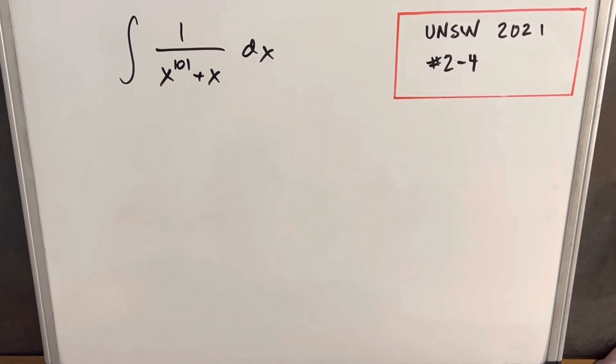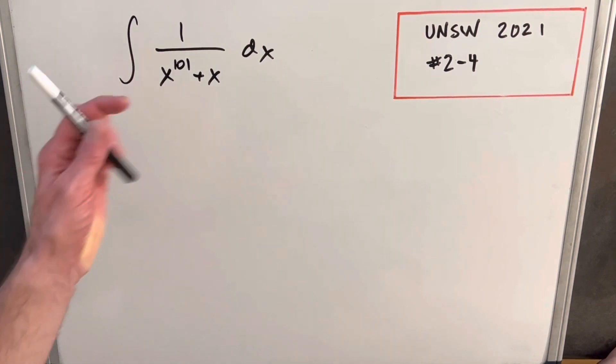We have the integral of one over x to the 101 plus x dx. Now, I did notice that we have kind of a large power here. 101 could be scary, but the thing to really notice is it's not actually that much different than if it was x to the fifth or x squared here.